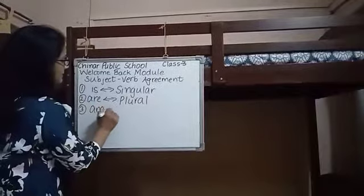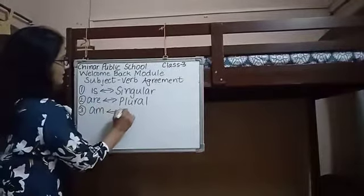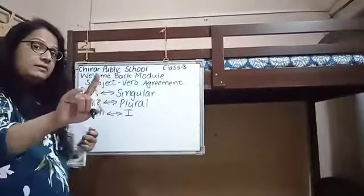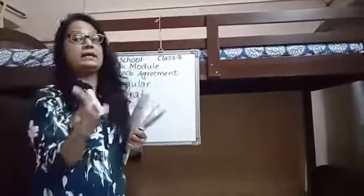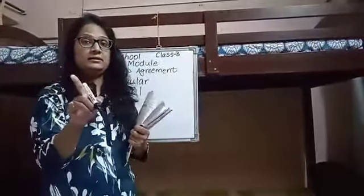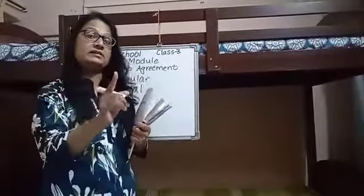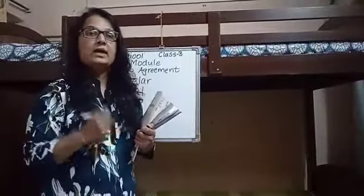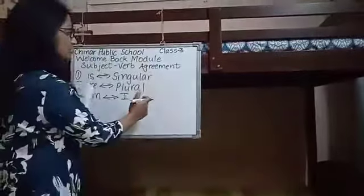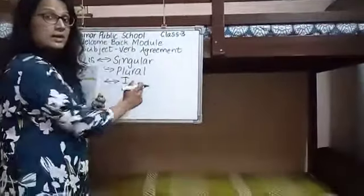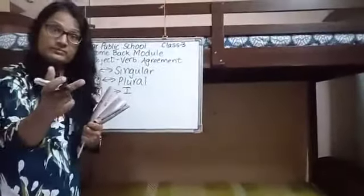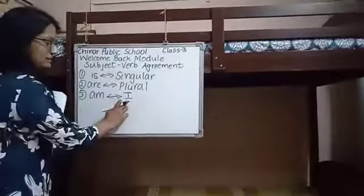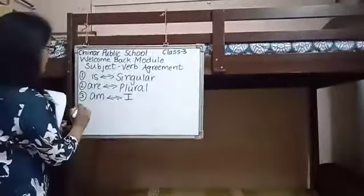'Am' is the best friend of 'I' — 'am' and 'I' will always come together. For example, 'I am writing on the board.' 'I am teaching you.' So, 'am' is the best friend of 'I'.